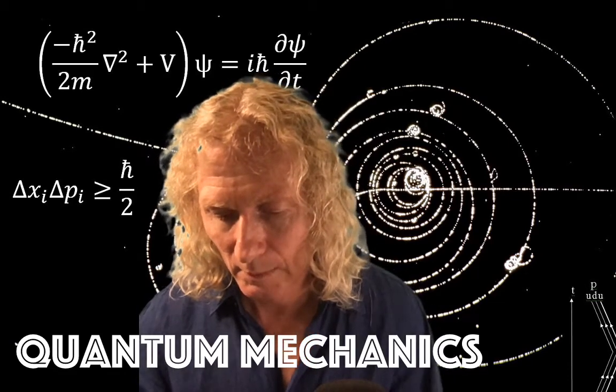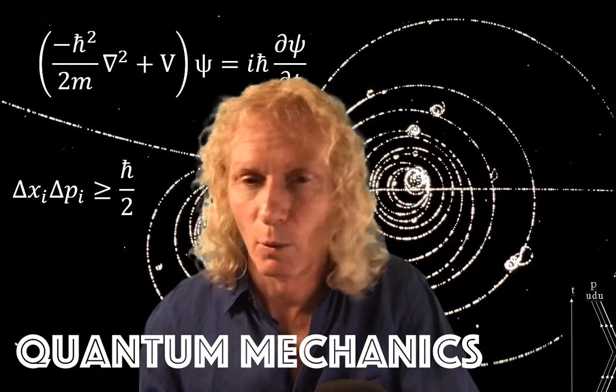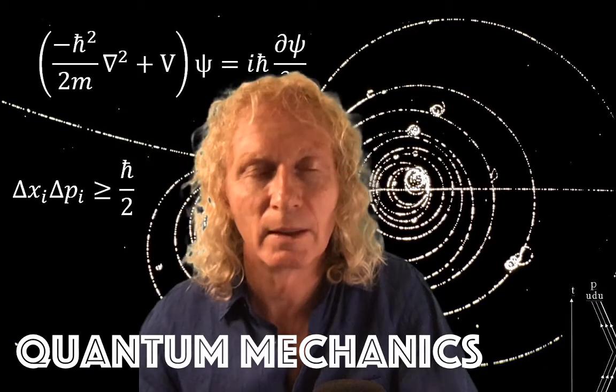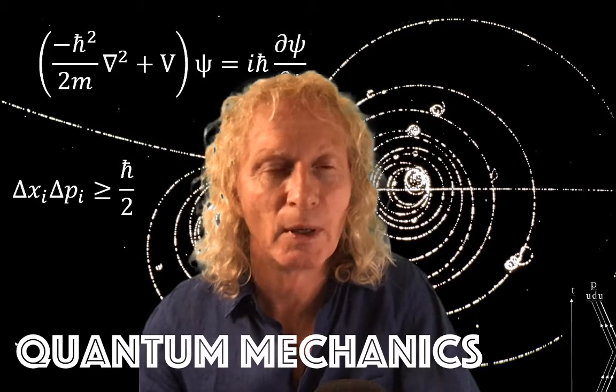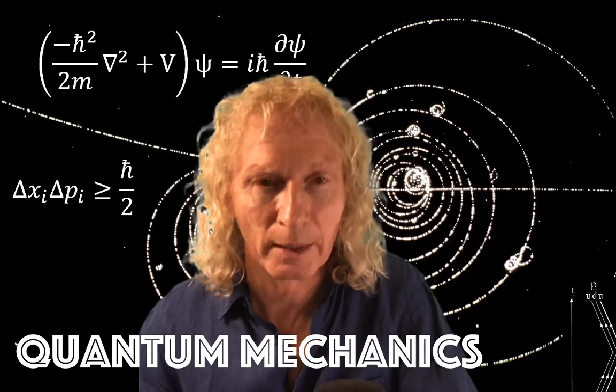Okay, so that's the expectation value for the position. What about the momentum? Well, it turns out that it's just going to be m times the time derivative of the expectation value of x.